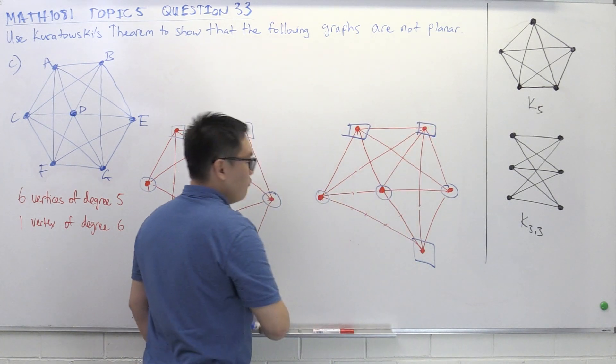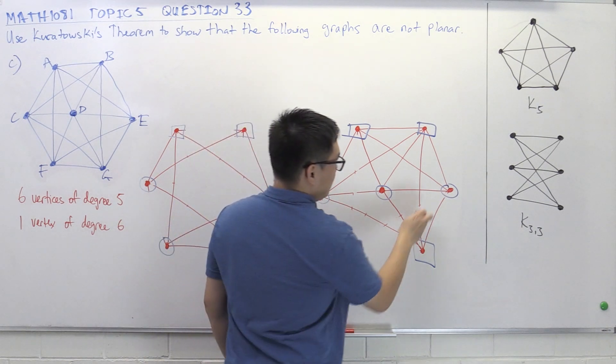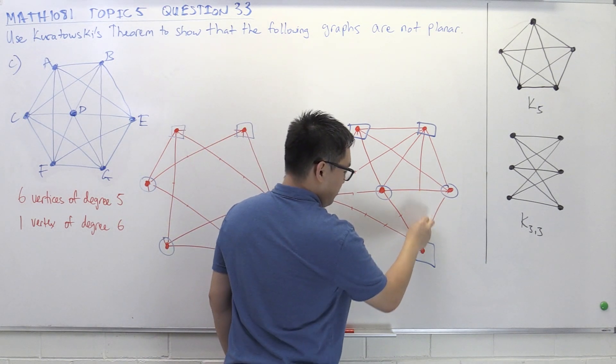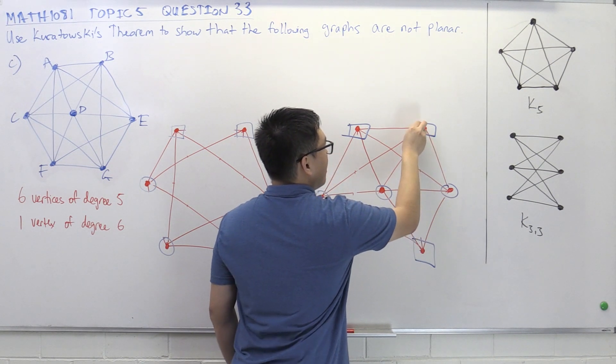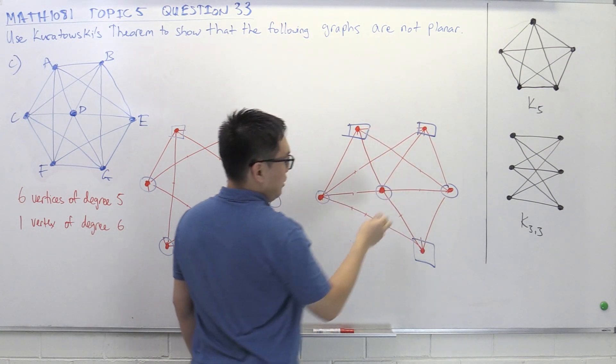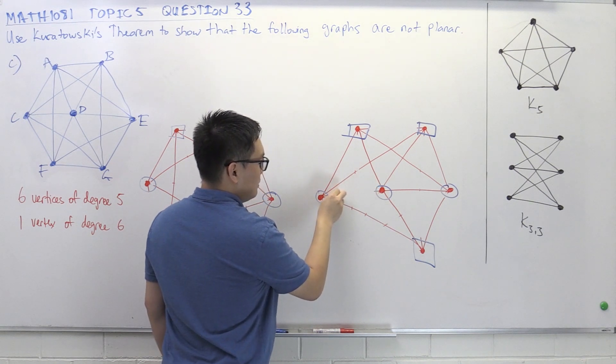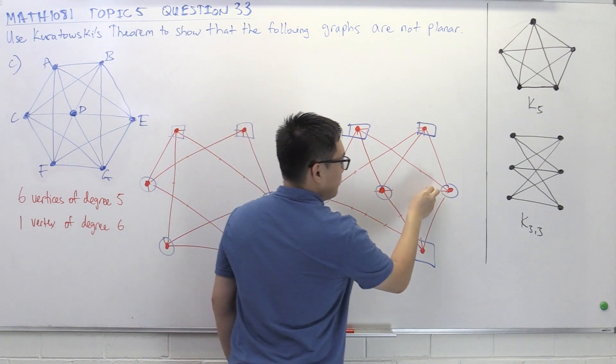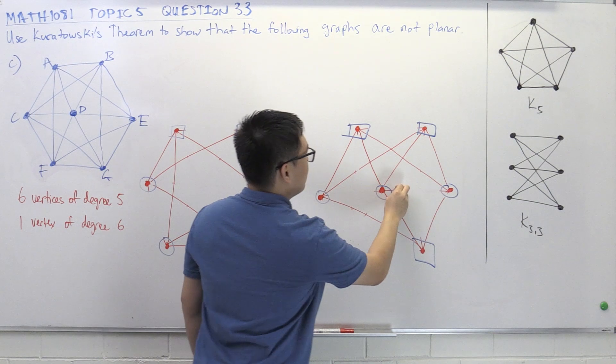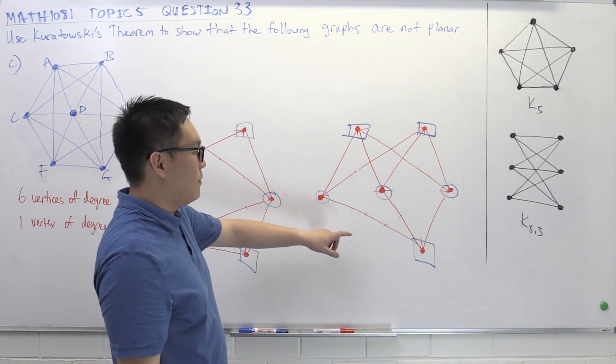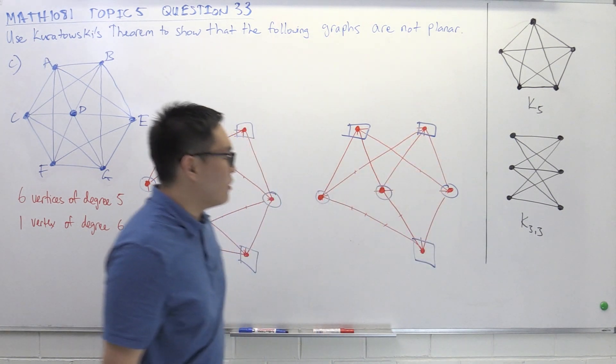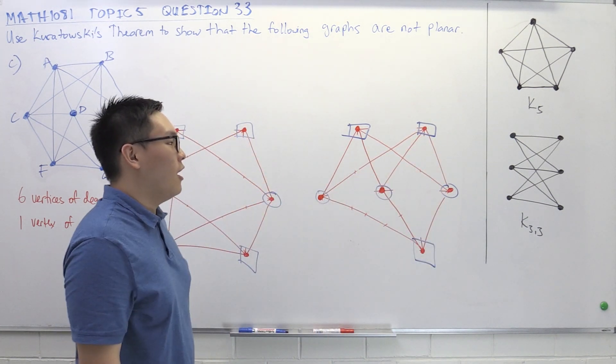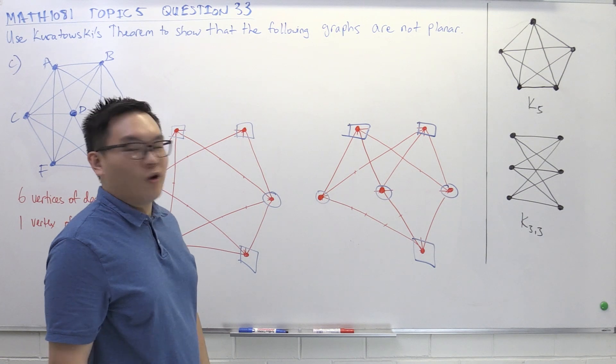Now I've got to remove the edges between the squares. So this one, and I need to remove the ones between circles. And let's see what we have left. We've got a redrawing of K33. If I drag this vertex over to the other side, we've got K33. All the squares are adjacent to all the circles.